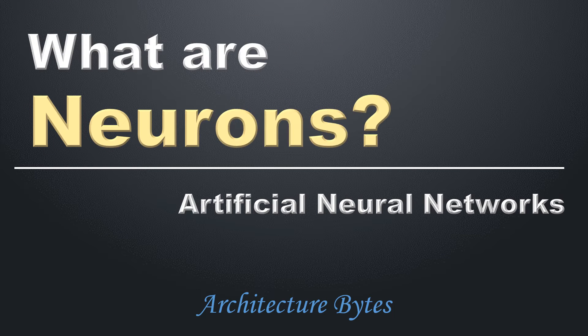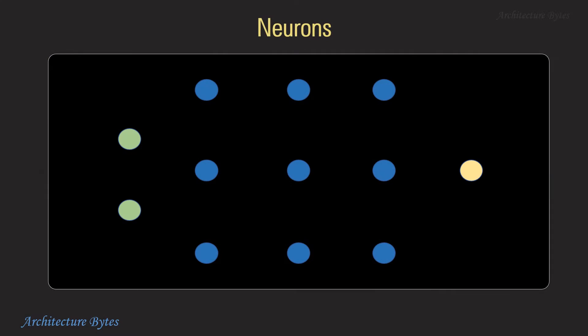What are neurons in artificial neural networks? Neurons are basic building blocks of a neural network. You can think of them as mathematical functions that process input data and produce an output.